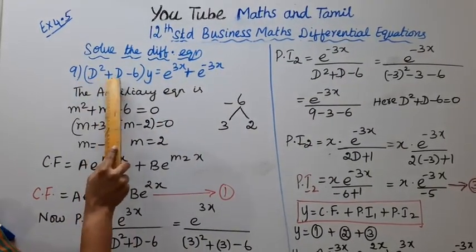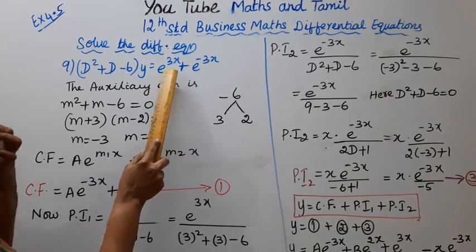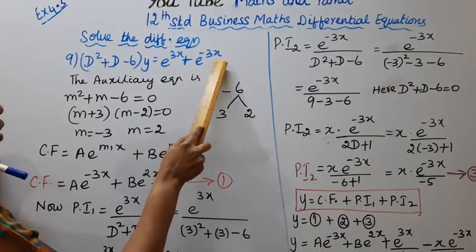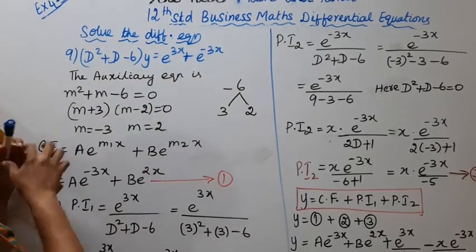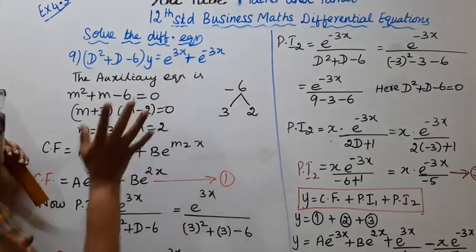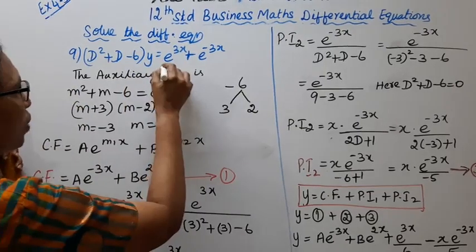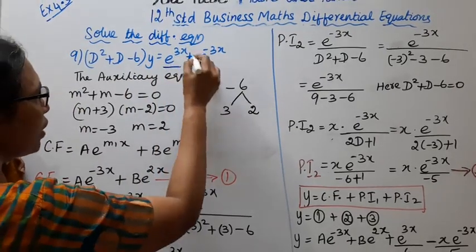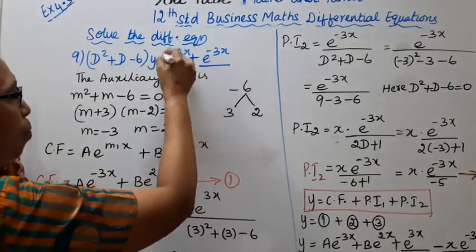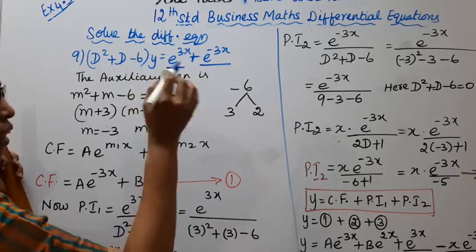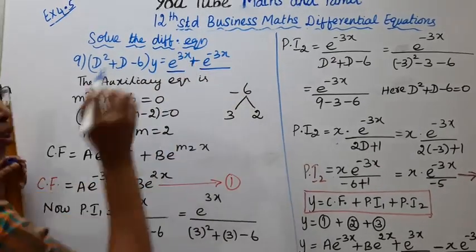The equation is (D² + D - 6)y = e^(3x) + e^(-3x). Set f(x) equal to 0 for the complementary function. Then f(x) = e^(3x) + e^(-3x) gives us particular integral 1 and particular integral 2.